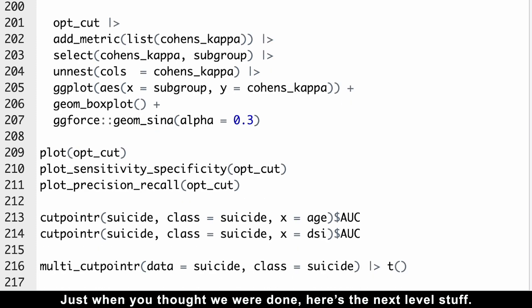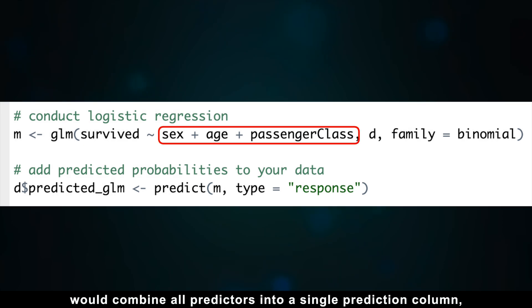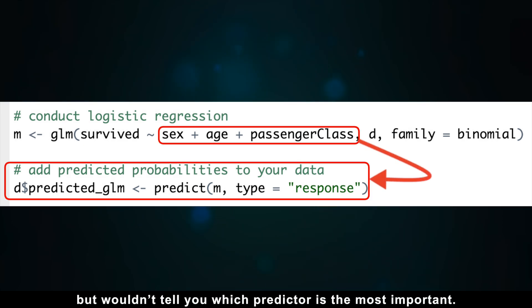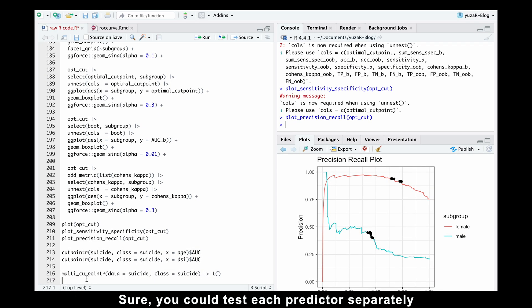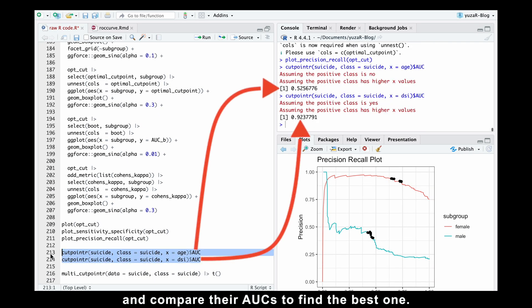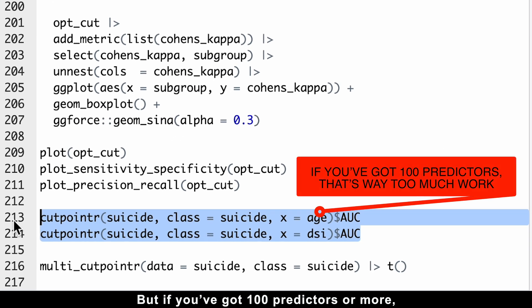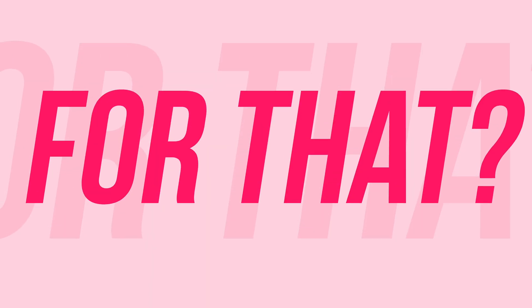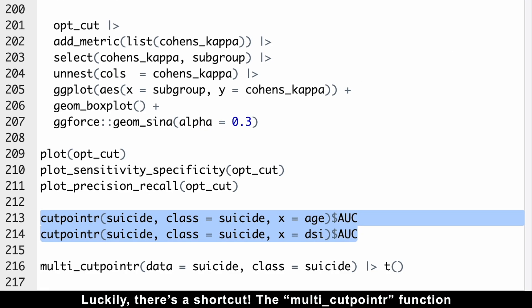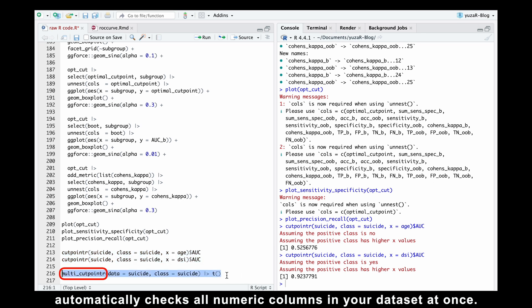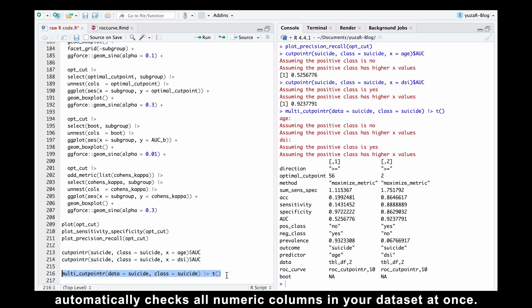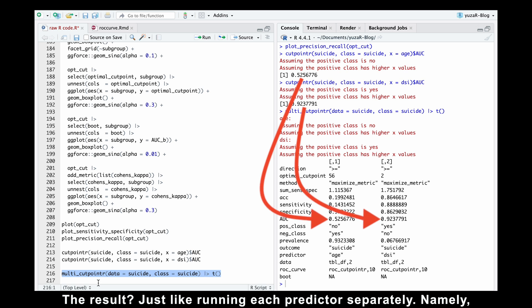Let's say you are testing a new drug and have multiple predictors driving your cutpoint. Things like age or DSI from the suicide package. A multivariable model would combine all predictors into a single prediction column, but wouldn't tell you which predictor is the most important. Sure, you could test each predictor separately and compare their area under the curves to find the best one. But if you've got 100 predictors or more, that's way too much work. Who has time for that? Luckily, there is a shortcut. The multi-cutpointr function automatically checks all numeric columns in your dataset at once.